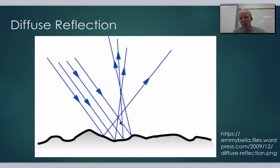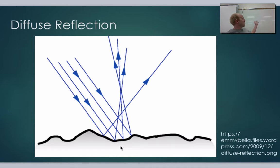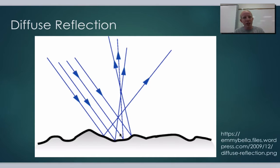Diffuse reflection is preferable — we see the object rather than reflections of other things in the object. You can see it on some surfaces, like the whiteboard behind me, which may show a glare from the lights above because it's relatively smooth. At lower angles it acts more like a mirror. But mirrors are generally very flat, so they mostly only reflect and match the law of reflection perfectly.